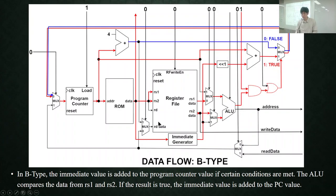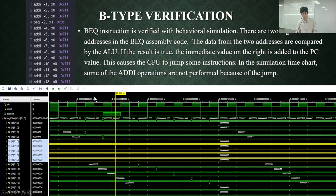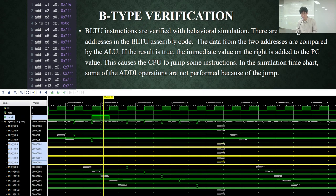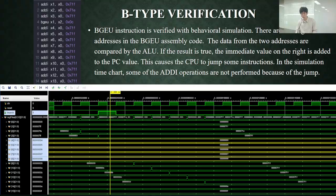This shows the data flow of B-type. The ALU compares the value of RS1 data and RS2 data. If the result is true, the immediate value is added to the value of the current program counter, and this value goes back to the program counter. This is the simulation result of BEQ, BNE, BLT, BGE, BLTU, and BGEU instructions.